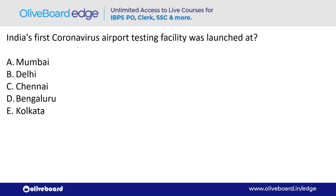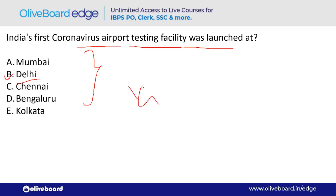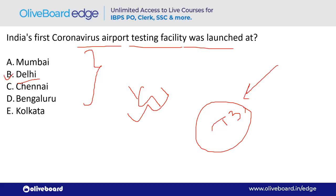India's first coronavirus airport testing facility was launched where? It was launched in Delhi — option B. The facility is at the T3 terminal of Indira Gandhi International Airport, which is the international terminal.